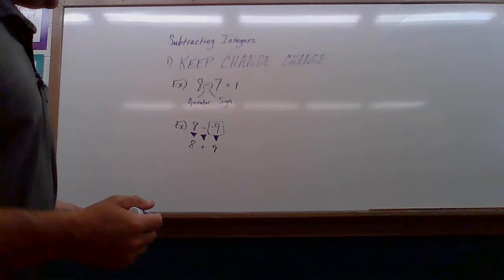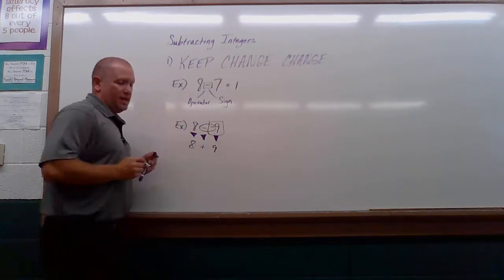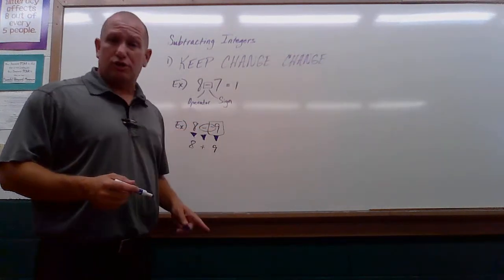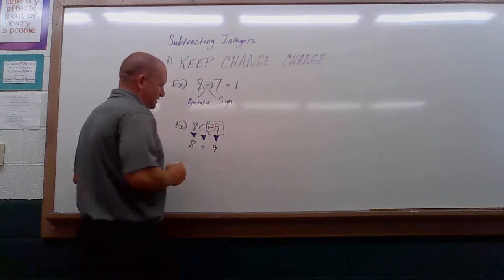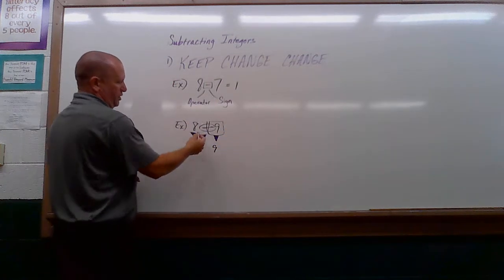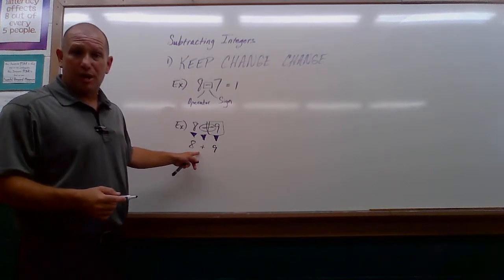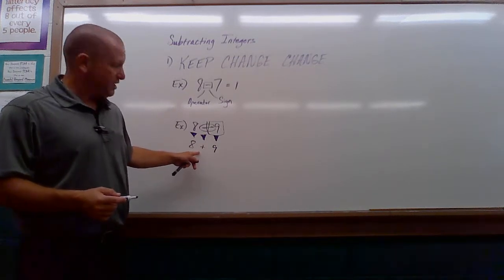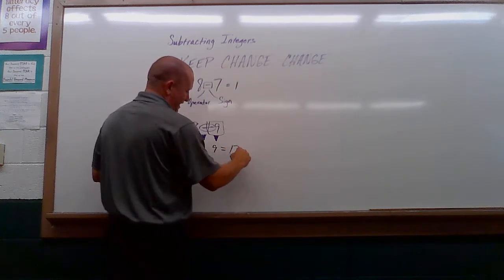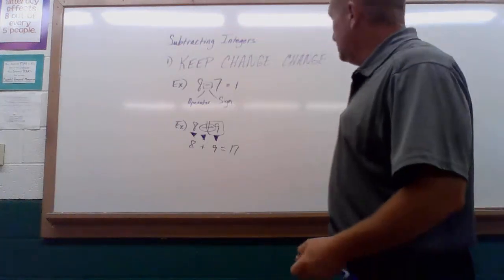Another way to think about this: any time you have back-to-back negatives — a minus sign and a negative sign — you can turn them into one giant plus sign. But continuing with the keep, change, change method: keep, change, change. Now just like yesterday we have an addition problem. The signs are the same, so we add and use the sign that's in the problem, giving us a positive number.